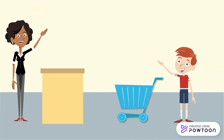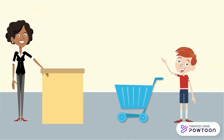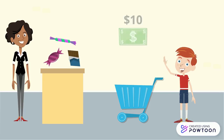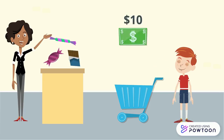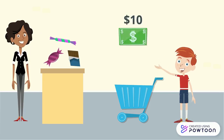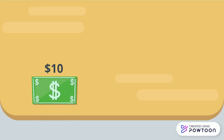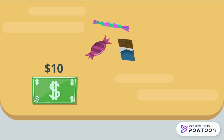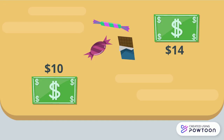Then you make your way to the cashier. You give her all the candy you picked out and you tell her that your mom gave you $10 to spend. You hand over the $10 to pay for your candy, but she tells you that you actually need $14 to pay for everything that you picked out.